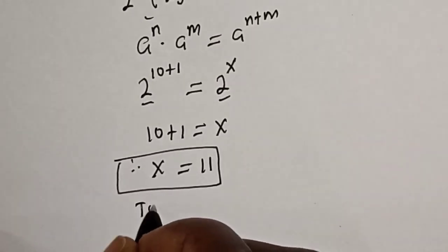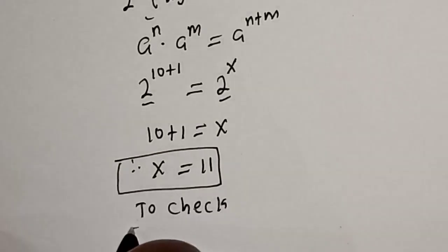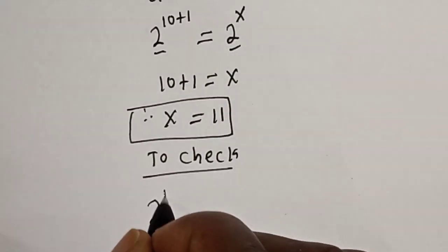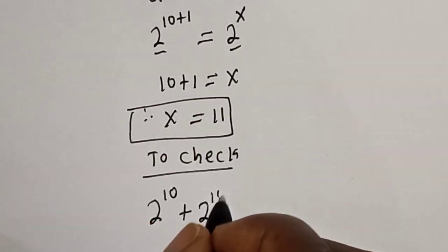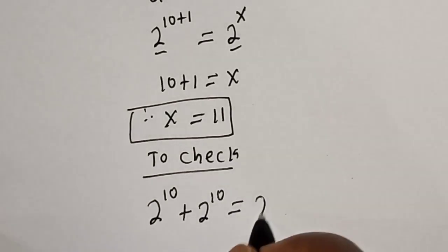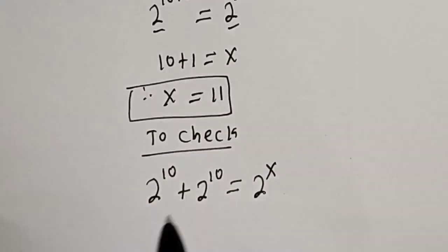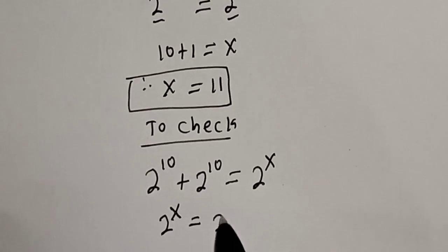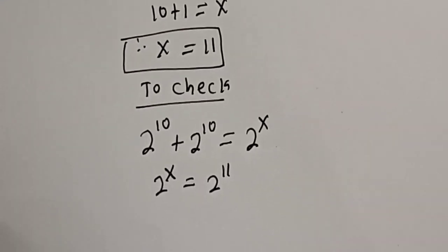To check: we have 2 raised to power 10 plus 2 raised to power 10 must be equal to 2 raised to power x, and x is 11. So 2 raised to power x is equal to 2 raised to power 11.